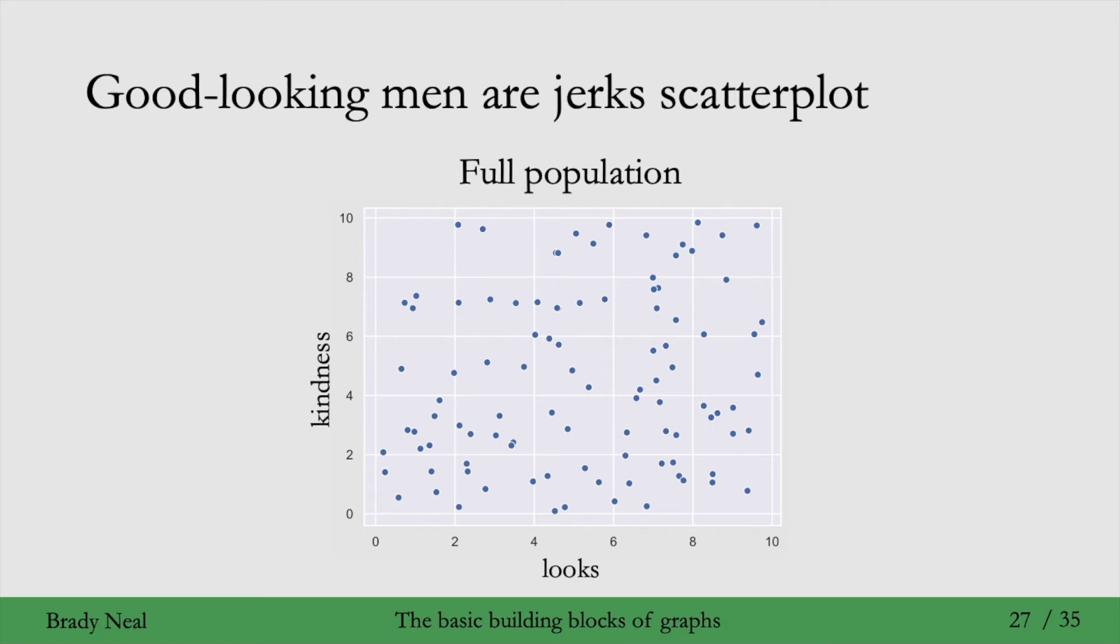Okay, say that looks and kindness are now real values on a scale of 0 to 10, rather than binary values. And say that each point is a person in the general population. So, you don't actually see any correlation or any association here. Looks and kindness look pretty independent.